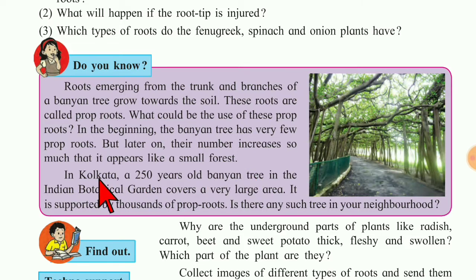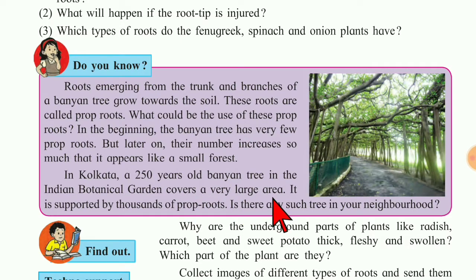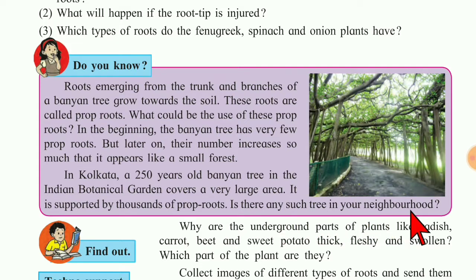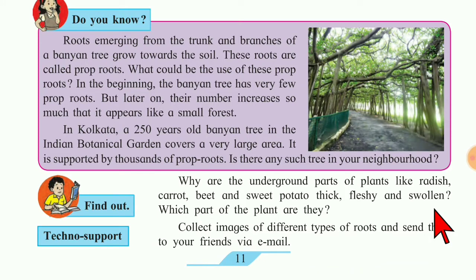In Kolkata, a 250-year-old banyan tree in the Indian Botanical Garden covers a very large area and is supported by thousands of prop roots. If there is any such tree in your neighborhood, you should observe it carefully.